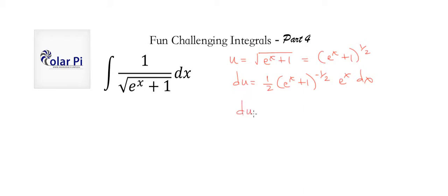And then we could rewrite du, a bit cleaned up, as 1 half times 1 divided by, poor division sign, sorry, 1 divided by root e to the x plus 1, but remember, root e to the x plus 1 was u, so we can write 1 over u instead.